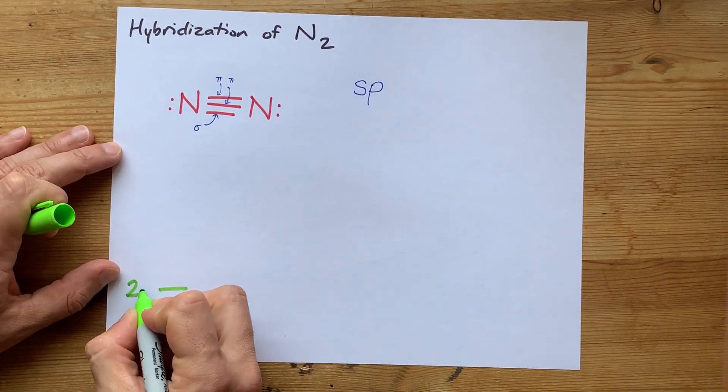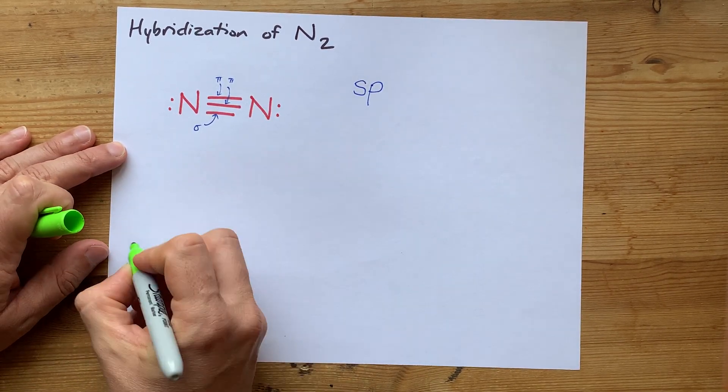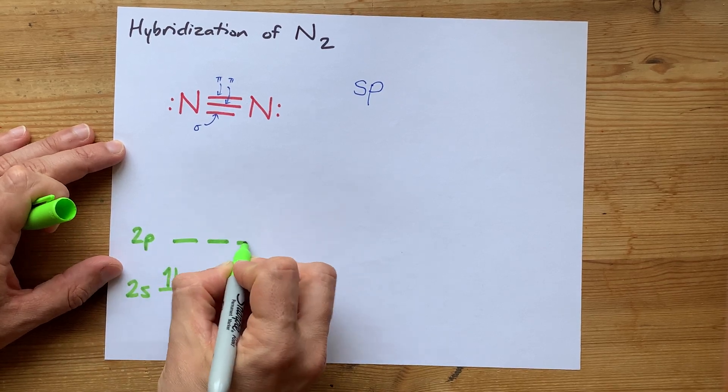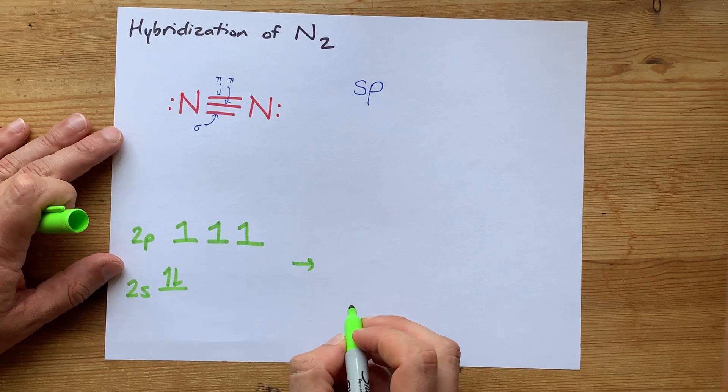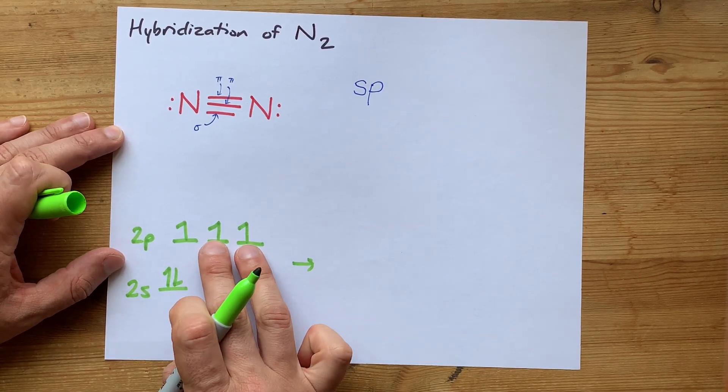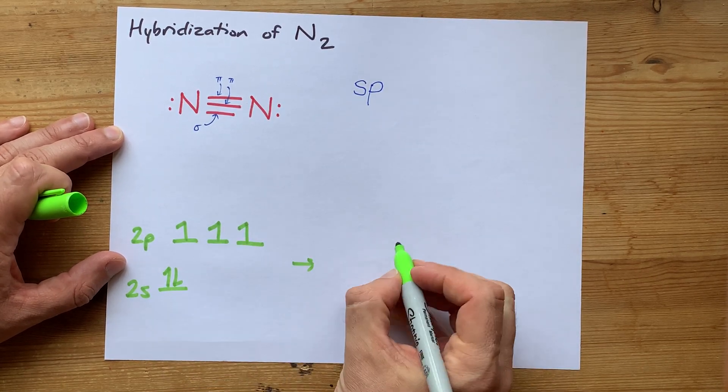The ground state for nitrogen has five valence electrons. And then, when it's hybridized, two of these p's need to be left over,